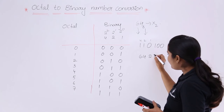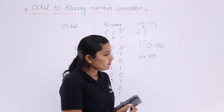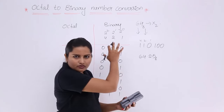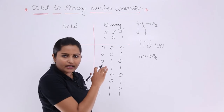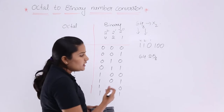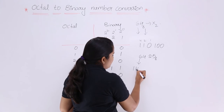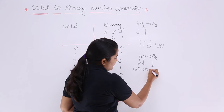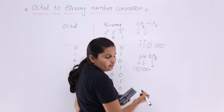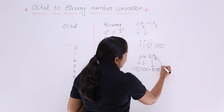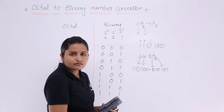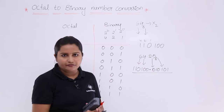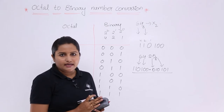For example, if you have 64.25 as your octal value and want to convert it to binary, decode each digit using the table with 4-2-1 as reference. For 6: 1 1 0; for 4: 1 0 0; take the point as it is; for 2: 0 1 0; for 5: 1 0 1. So the binary equivalent of octal 64.25 is 110100.010101.